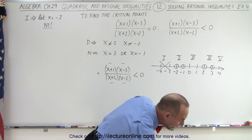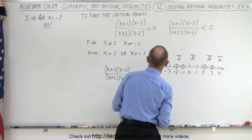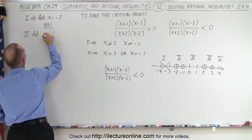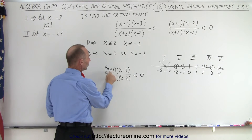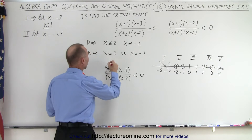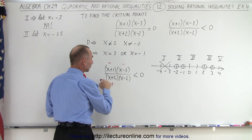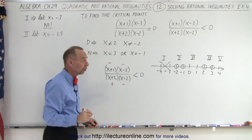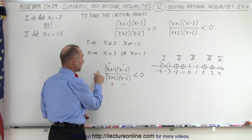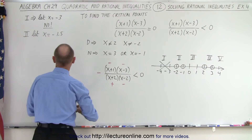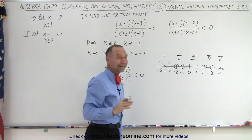For region two, let's pick x = -1.5, right between negative one and negative two. Negative 1.5 plus 1 is still negative. Negative 1.5 minus 3 is still negative. Negative 1.5 plus 2 is positive, since 2 is bigger than 1.5. Negative 1.5 minus 2 is negative. We have three negatives and one positive. Three negatives overall makes the result negative, and a negative number is less than zero, so region two satisfies the inequality.